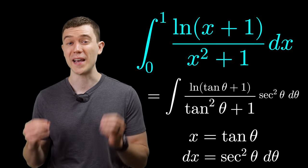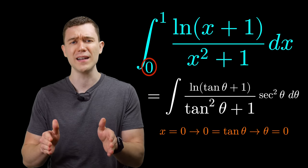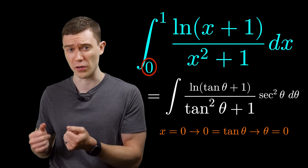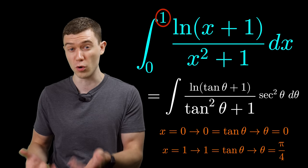Lastly, let's just change those x bounds to theta bounds. If we plug in zero for x, we'll see that's also zero for theta. If we plug in one for x, that will be pi over four for theta.